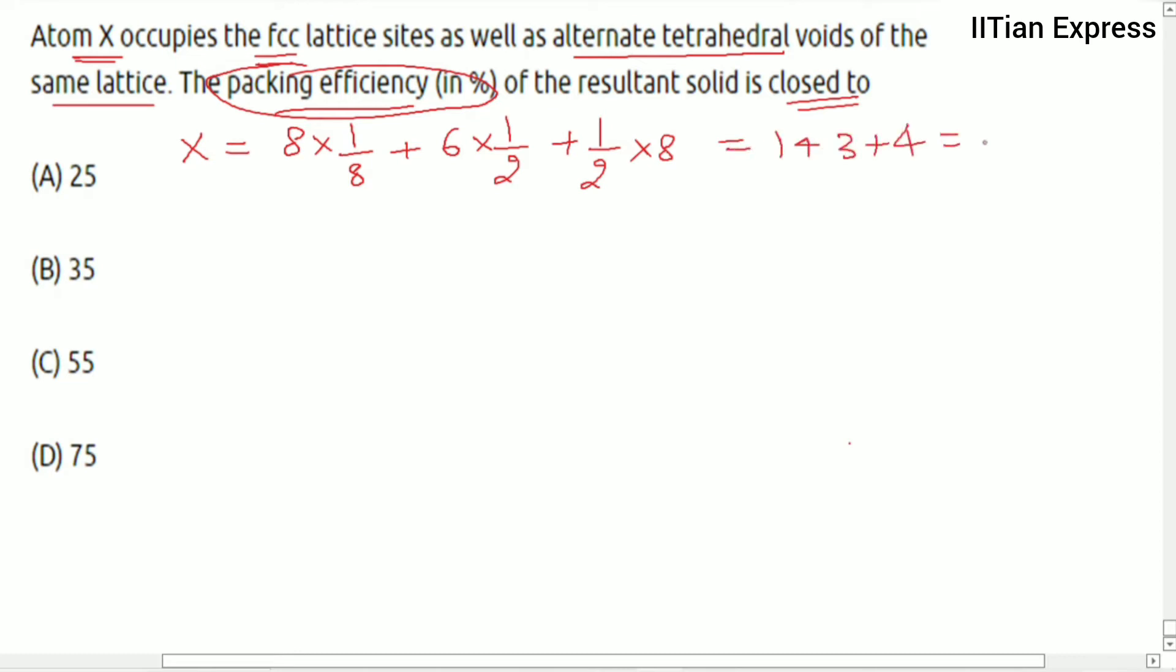Now we know the formula that is 2r equals root 3 by 4 times a. So further it's going to be like r equals root 3 divided by 8 times a.